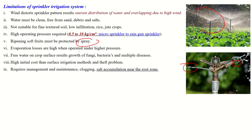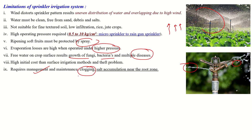Evaporation losses are high when the system is operated under high pressure, because the water comes from the nozzle in the form of very fine droplets and automatically evaporates in the atmosphere. Free water on the crop results in the growth of fungi and bacteria, leading to multiple diseases, as standing water on the plant results in fungus growth and other diseases. The system has high initial cost compared to surface irrigation, requires maintenance and management, and needs to be frequently cleaned to avoid clogging. There is also a chance of salt accumulation near the root zone of the crop.